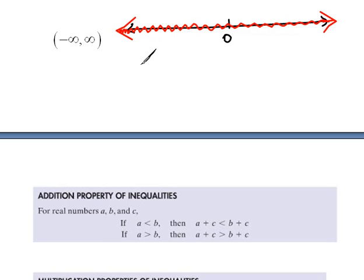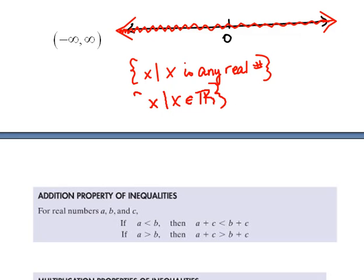When we write it in set builder notation, we have some choices. Probably the easiest way though to do it would be to say the set of all x's such that x is any real number. You could also say that x is an element of R. You could say it that way for using your set stuff that we learned at the very beginning part of this course.